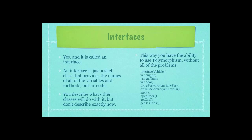You can see here how I created an interface named Vehicle, and then assigned to it three variables — Engine, Gas Tank, and Door — and then defined six functions that all classes of type Vehicle would have to implement: drive forward, drive backwards, stop, open door, get gas, and get gas tank.